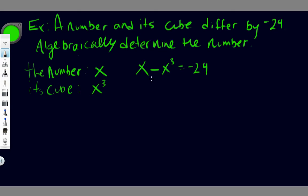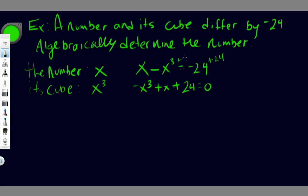We can rearrange that so it looks like a typical cubic that we'll be solving the zeros for. So we get negative x cubed plus x plus 24 equals 0. I just rearranged the order and added 24 to both sides.